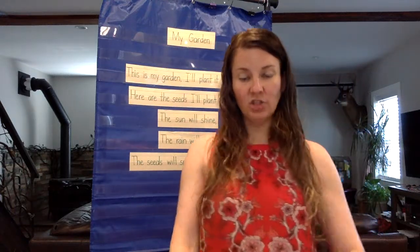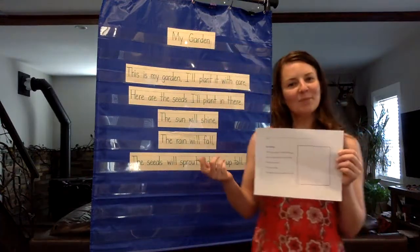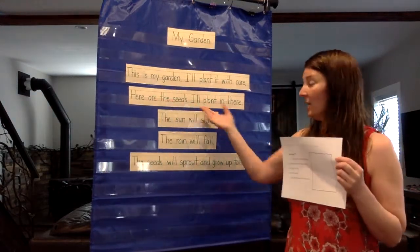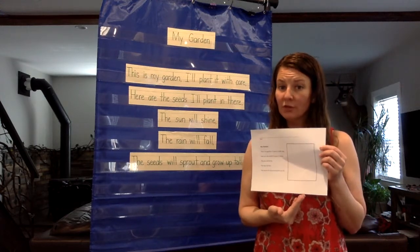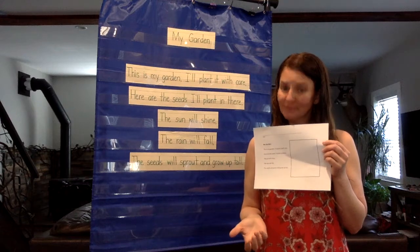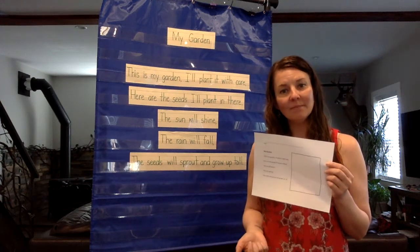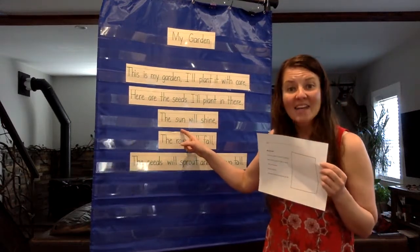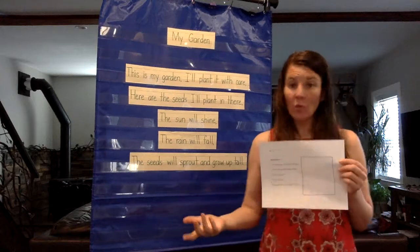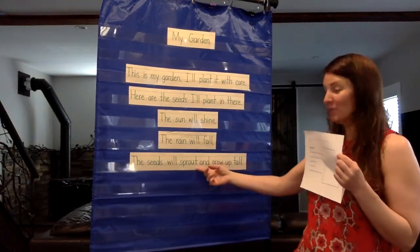How do you suppose we can illustrate this poem? If you said draw a picture of a garden, I like your thinking. What do you suppose is going to go in the garden? Seeds — we need seeds. It says 'here are the seeds I'll plant in there,' so you could draw a picture of your seeds. What are you going to plant your seeds in? Dirt. And what color is dirt? Brown. I want to see that brown dirt. In order for seeds to grow, what do they need? Our poem even says it — the sun will shine, they need sunlight. The rain will fall — we need to water our seeds. If we have the sun and the rain, the seeds will sprout and grow up tall.